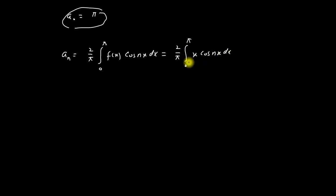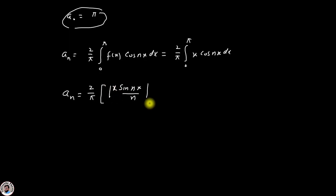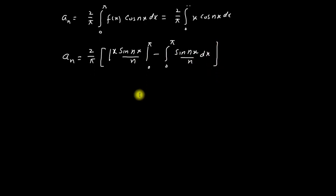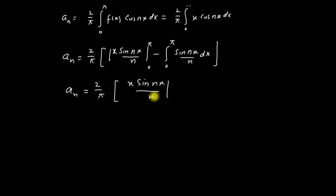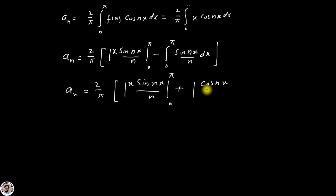We integrate this using the product rule, giving: aₙ = (2/π) × [x sin(nx)/n from 0 to π − integration from 0 to π of sin(nx)/n dx]. The integration of sin(nx) is −cos(nx), so the minus signs cancel and we get +cos(nx)/n² with limits from 0 to π.